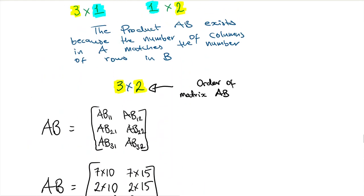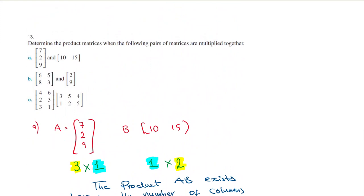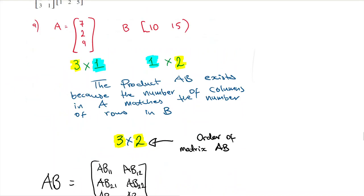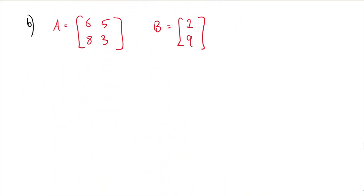So now we're doing question 13B, which says determine the product matrix when the following pairs are multiplied together. We're going to go through that one. I have labeled one matrix A.